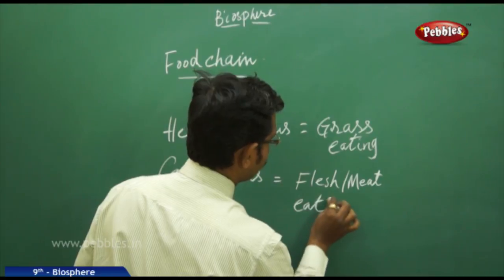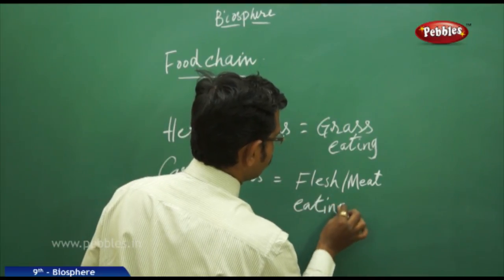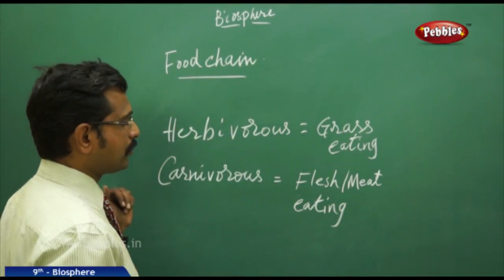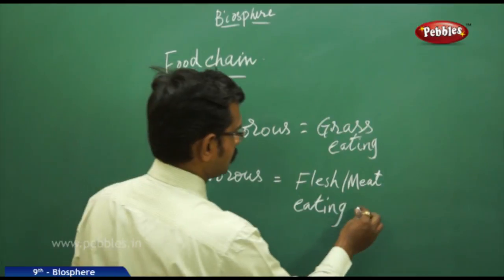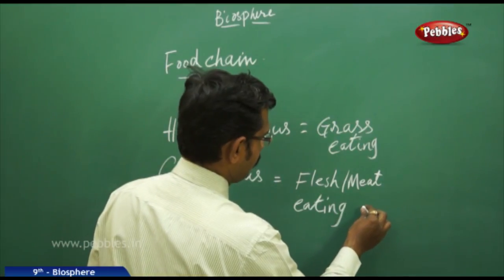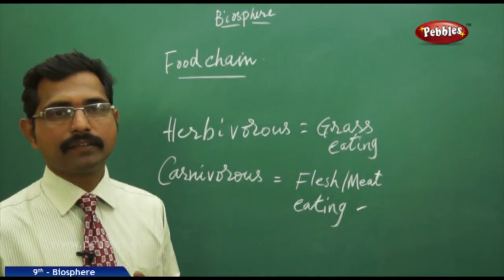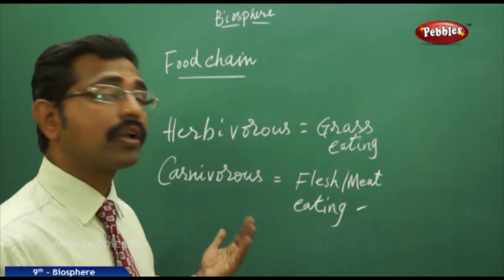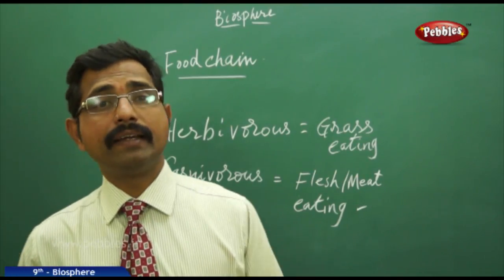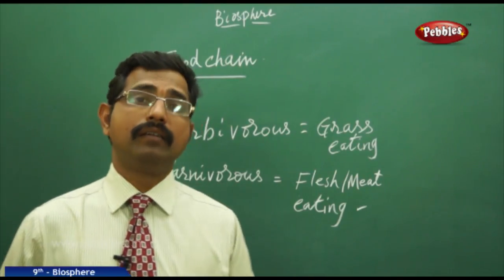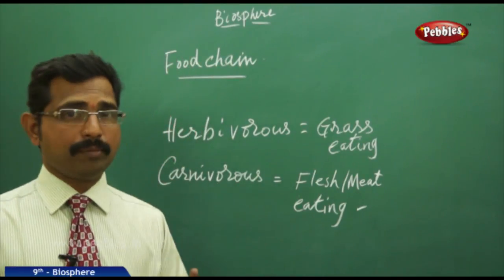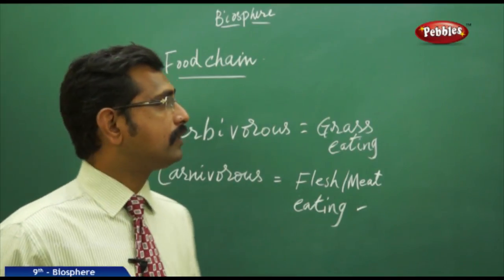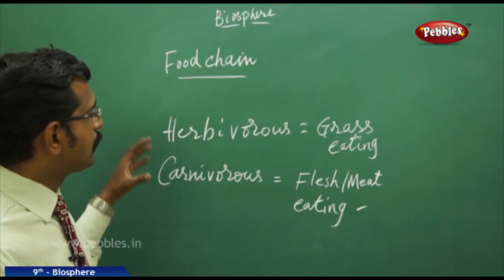Now, are human beings herbivorous or carnivorous? Human beings are carnivorous animals because they eat herbivorous animals. So this is about the food chain.